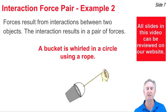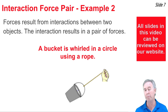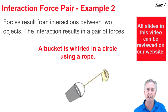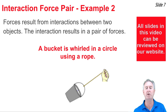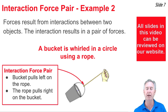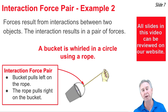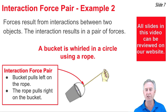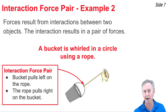Here's a second example: a bucket being swung in a circle using a rope. The rope touches the bucket, and since you can't touch without being touched, the bucket touches the rope. Here's how we would describe that interaction force pair: the bucket pulls leftward and downward on the rope, and the rope pulls upward and rightward on the bucket. This is what Newton's Third Law suggests — forces result from interactions, and that interaction results in a pair of forces.